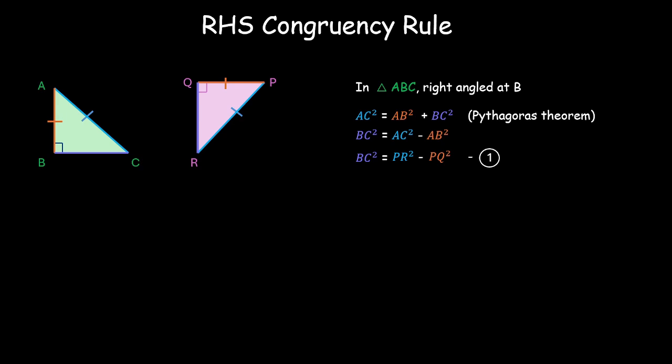Now, let us look at the pink colored triangle PQR. In this triangle as well, PR square is equal to PQ square plus QR square. Then again, we can just say that this is also Pythagoras theorem. So, QR square is equal to PR square minus PQ square. This is our equation 2.